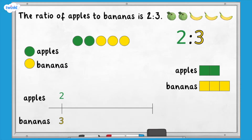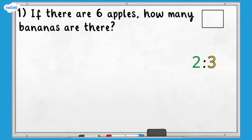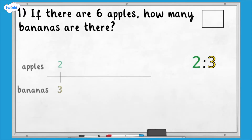Now let's look at some of the types of ratio problems we might need to solve. Question one: if there are six apples, how many bananas are there? Let's use the double number line to help solve this problem. First of all, let's add the information that we know — we know that there are six apples.